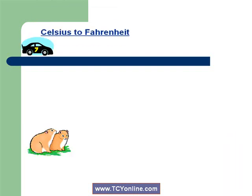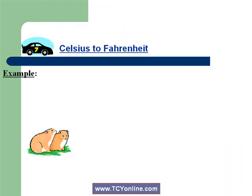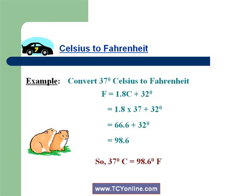Now let's consider an example. We need to convert 37 degrees Celsius to Fahrenheit. We know that °F = 1.8 × °C + 32. Simply plug in the Celsius value as 37, and we get the Fahrenheit degree as 98.6. So 37 degrees Celsius equals 98.6 degrees Fahrenheit.